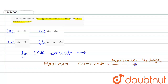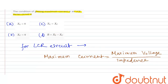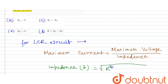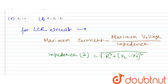Because of the LCR circuit — inductor, resistor, and capacitor — maximum current equals maximum voltage divided by impedance. The impedance Z is equal to the square root of R squared plus inductive reactance minus capacitive reactance, the whole square: Z = √(R² + (XL − XC)²). So for the maximum value of current, the impedance should be minimum.